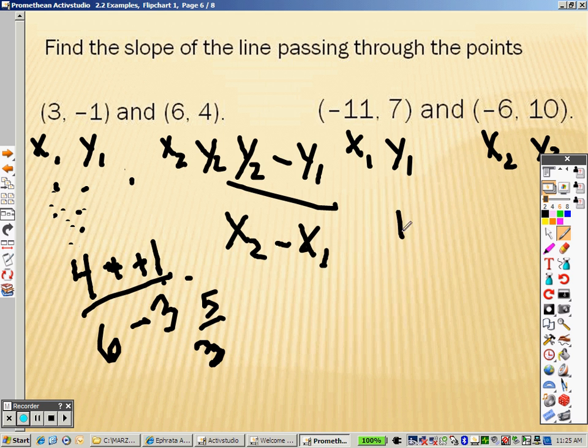Over here, it would be y2, which is 10, minus y1, which is 7, over negative 6, which is x2, minus negative 11, which is x1, plus positive. So we end up getting 3 on top and 5 on the bottom.